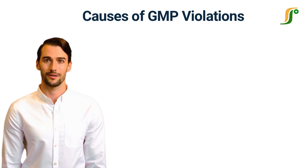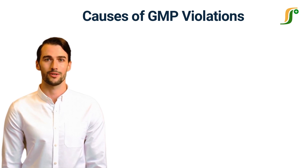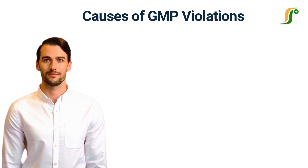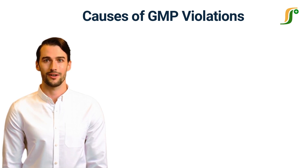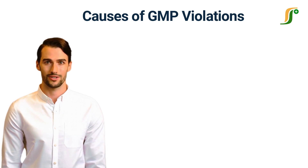GMP regulations are recommendations to ensure the safety and effectiveness of pharmaceutical products. GMP regulation ensures the effectiveness and safety of the products, and it also ensures that the product does not have any harmful ingredients. When any facility does not follow the GMP regulation, it is considered a GMP violation.